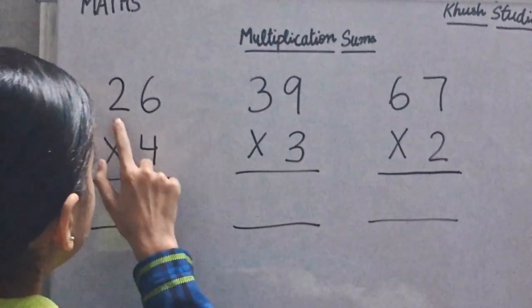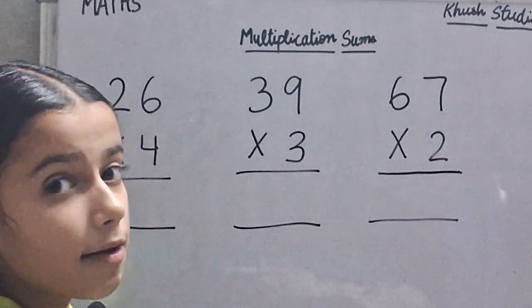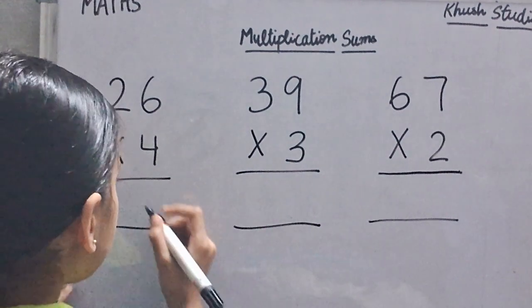First is 26 multiply by 4. First we will multiply 6 by 4. 6 fours are 24.